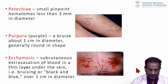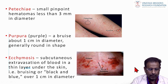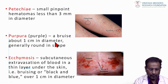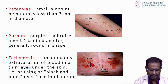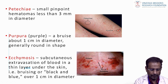Some important basic terminologies: petechiae are small pinpoint hematomas less than 3 mm in diameter. Purpura is a bluish lesion about 1 cm in diameter, generally round in shape — larger than petechiae. Ecchymosis is the largest lesion, representing subcutaneous extravasation of blood in a thin layer under the skin, over 1 cm in diameter. In size order: petechiae is smallest, then purpura, then ecchymosis.